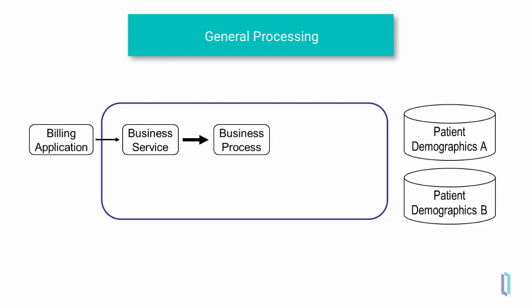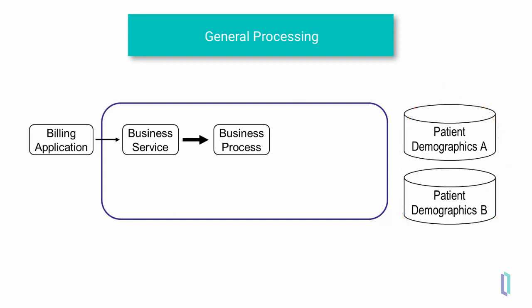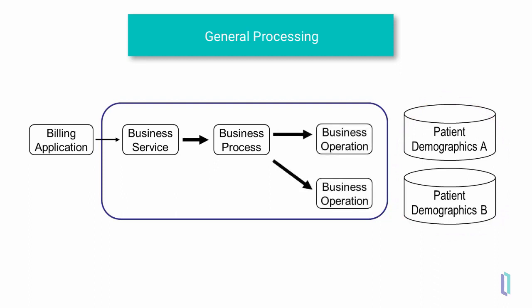The business process will control the obtaining and combining of data necessary for the response. Since the data for the response is contained in two different databases, the business process will send two separate requests to two separate business operations. Each business operation will communicate with one database.